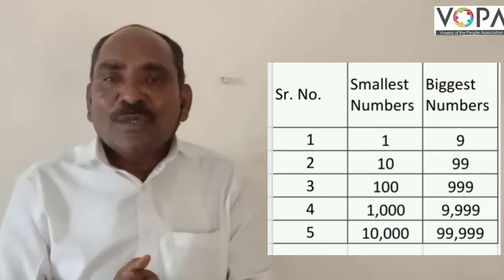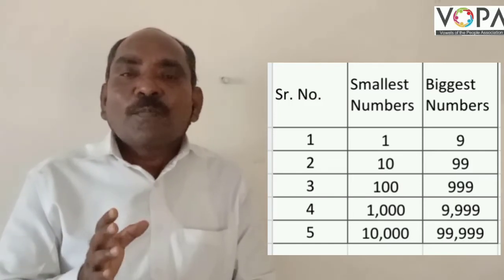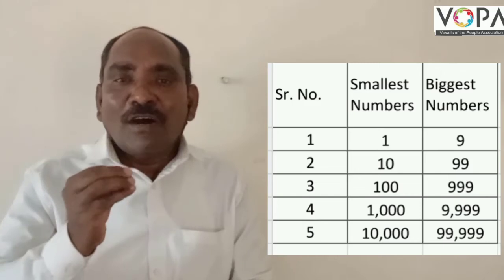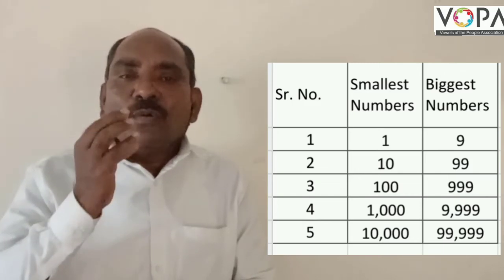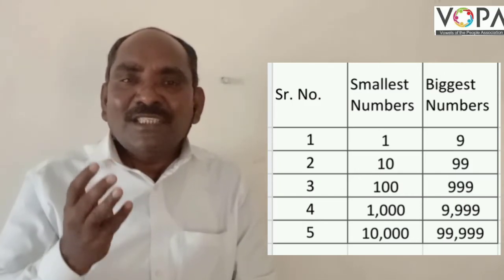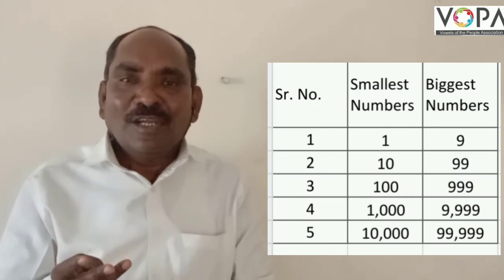In this way, we know about the smallest and biggest number of 1-digit, 2-digit, 3-digit, 4-digit, and 5-digit. Do you understand? Okay, thanks a lot. Thank you.